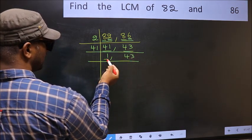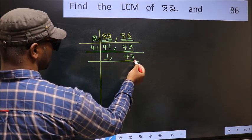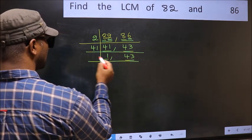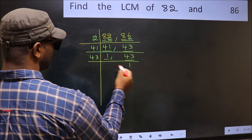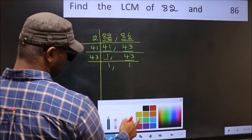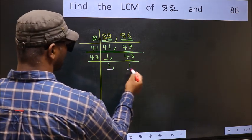Now, we got 1 here. So, focus on the next number 43. 43 is a prime number so 43 once 43. So, we got 1 in both the places.